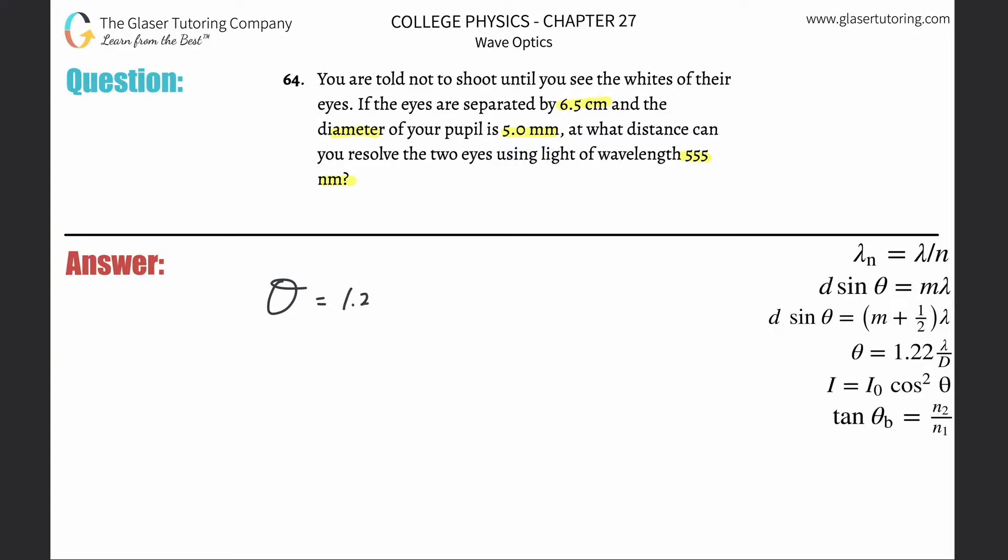The first thing we have to do is find the resolution angle. So this is 1.22 times the wavelength divided by the diameter of the pupil or aperture.